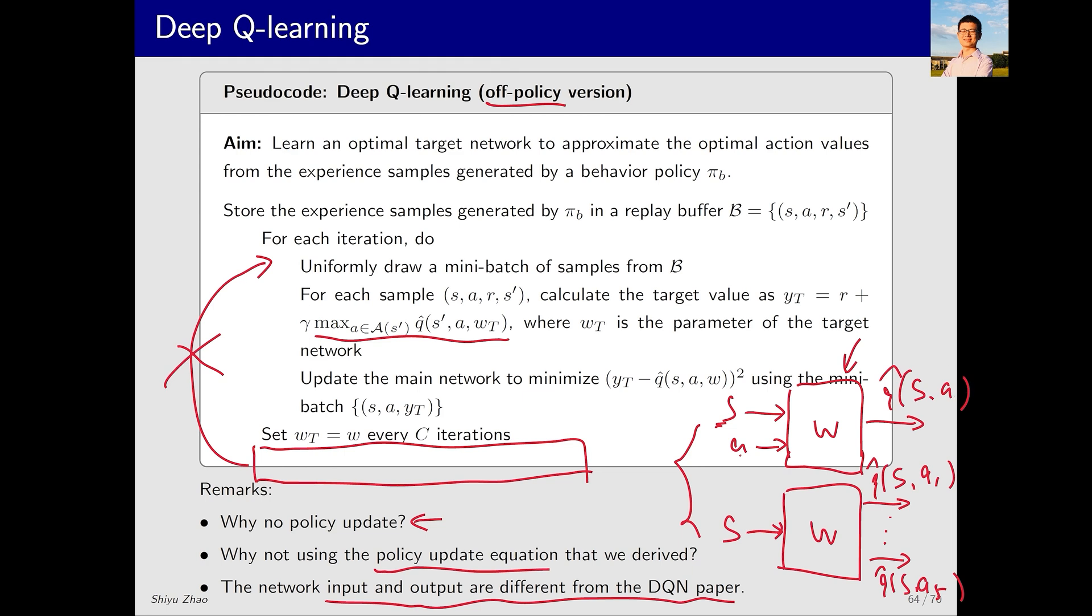In contrast, the neural network in the original paper is more computationally efficient. You input s just once and it directly outputs the q-values for all five actions. You don't need to run the network five times, allowing you to quickly determine which q-value is the largest.